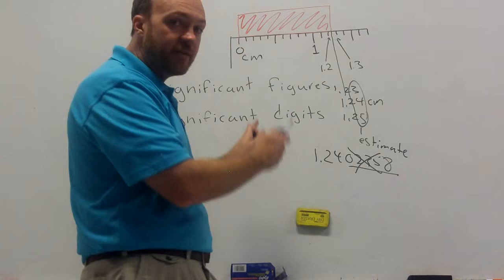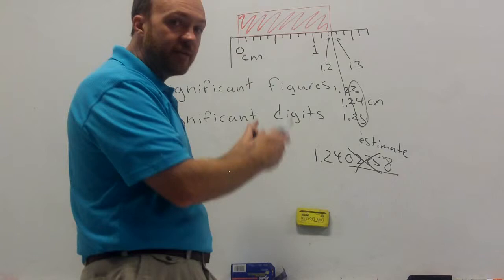If you can read to the tenths place exactly, then you can estimate one place beyond the tenths place. You can estimate to the hundredths place. So, here we can read the whole numbers exactly. We can read the tenths place exactly so we can estimate to the hundredths place. We always want to have one estimated digit.